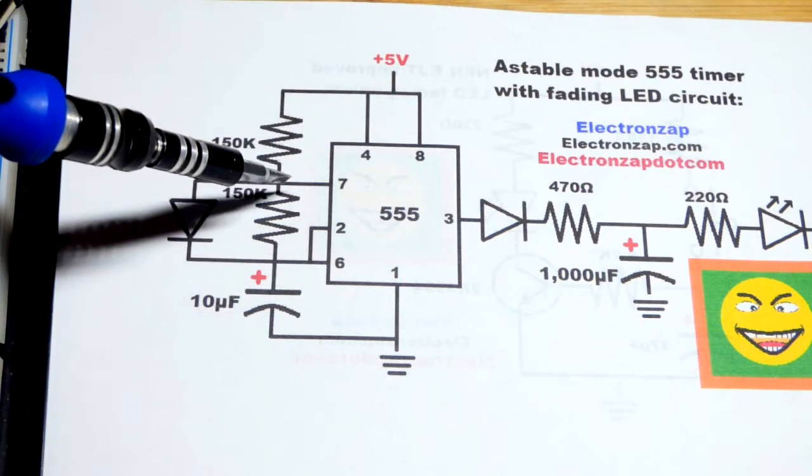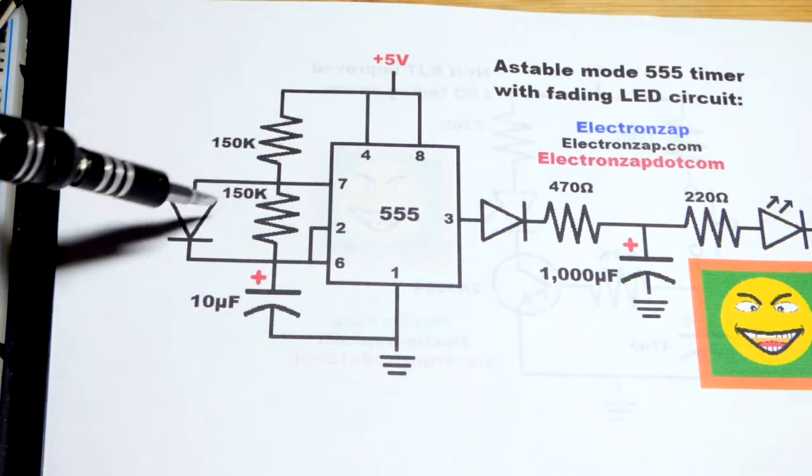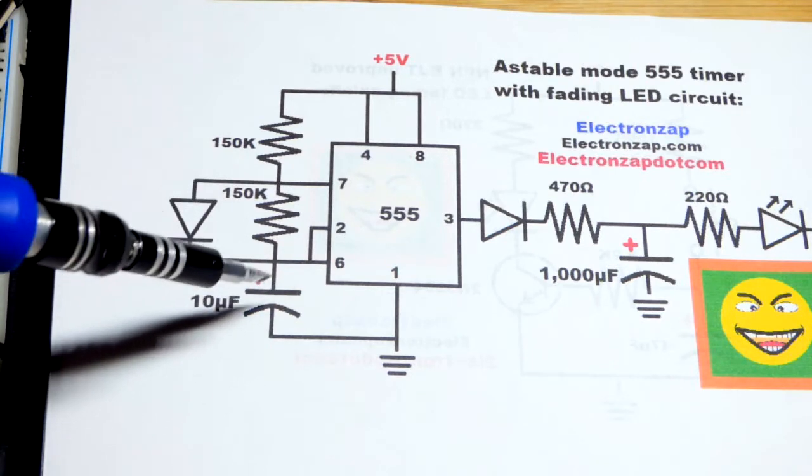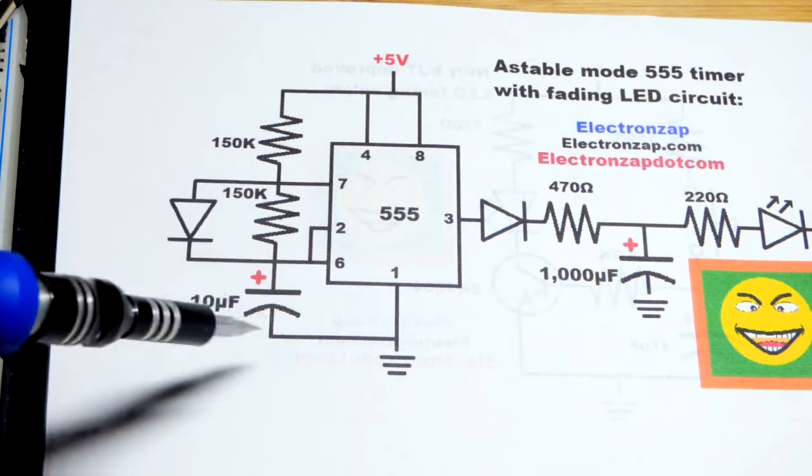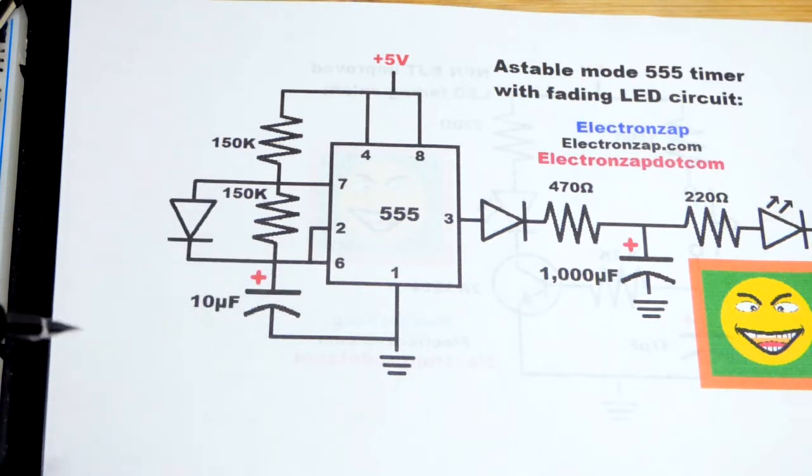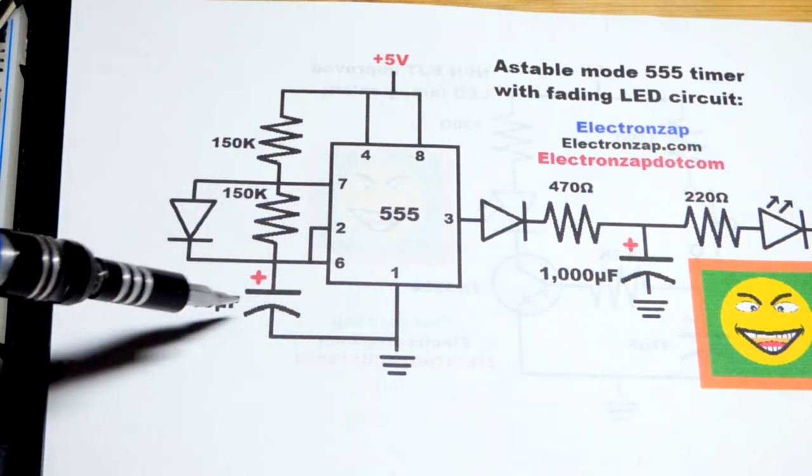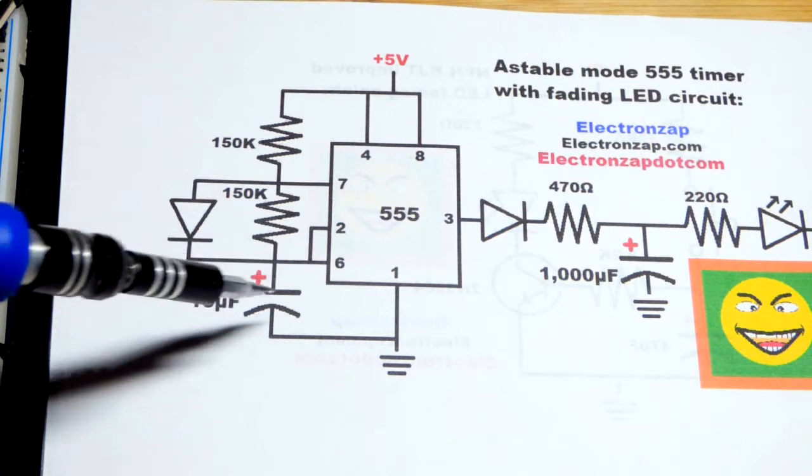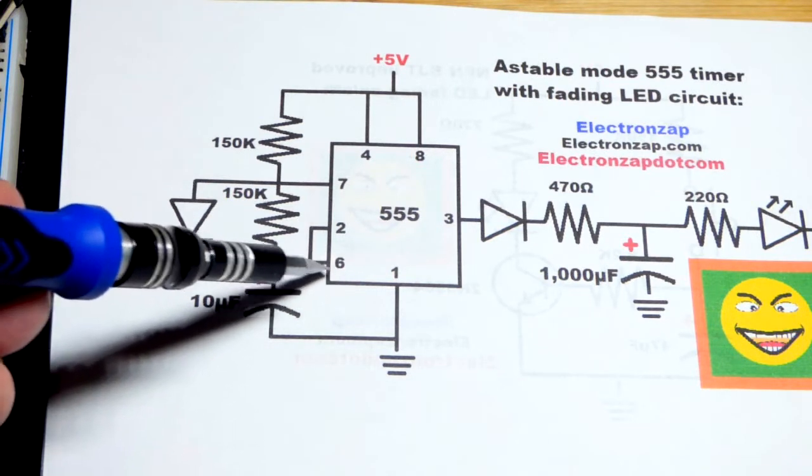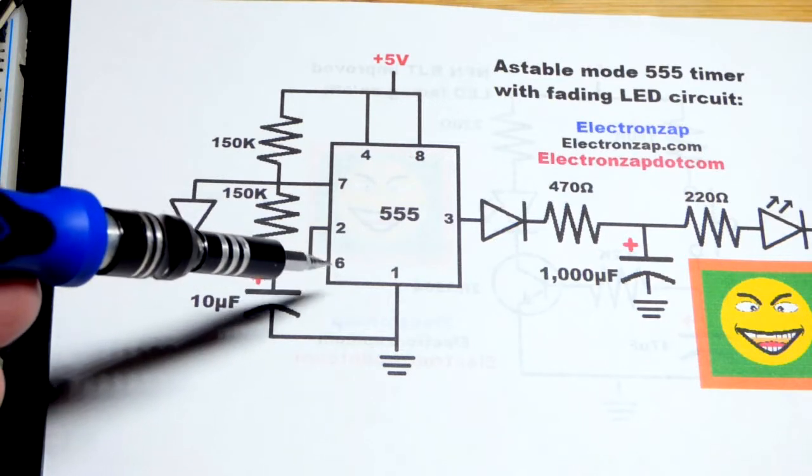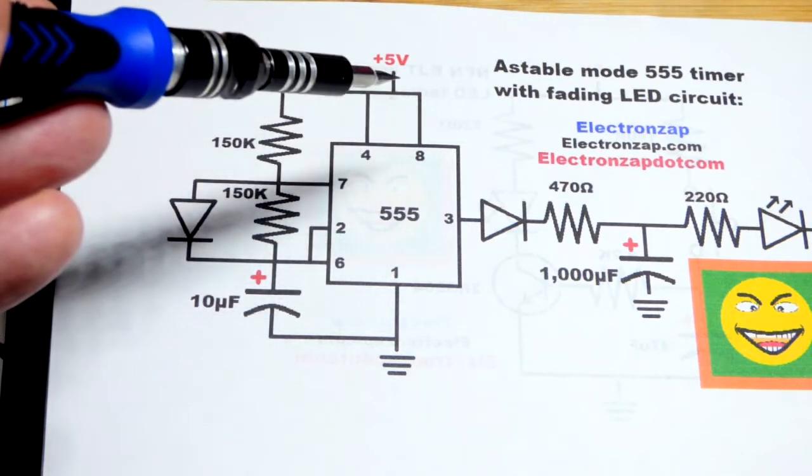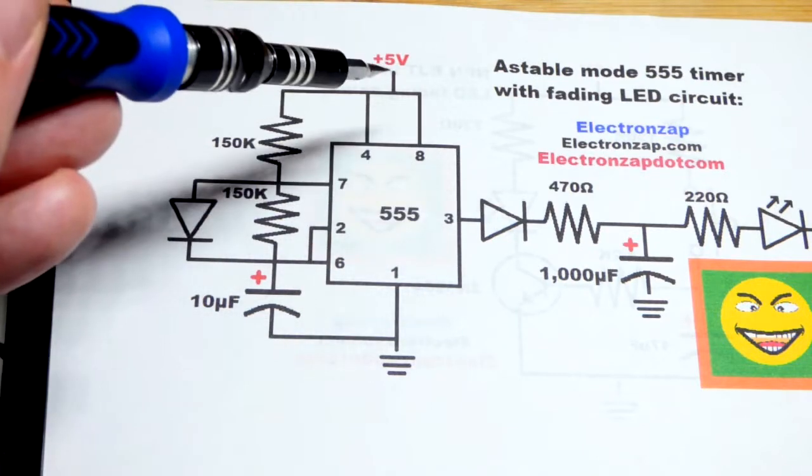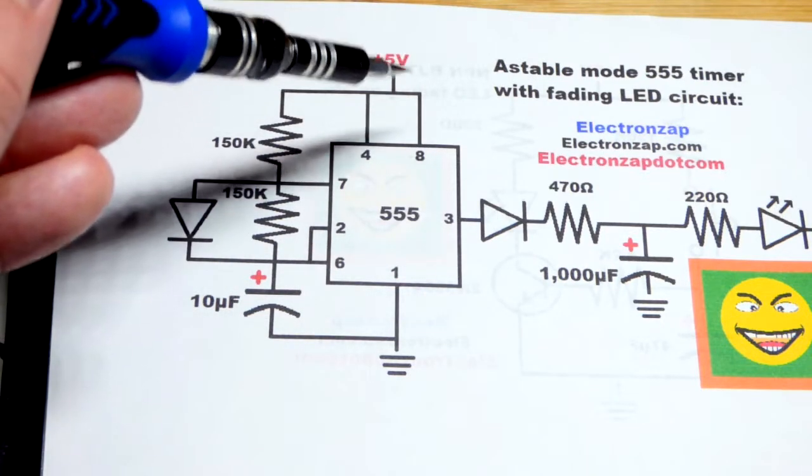It charges through that 150 kilohm resistor, that diode, and I'm going to use a 10 microfarad capacitor. So very little current but it's a low value capacitor, so it's going to charge in somewhere around a second approximately. Now the capacitor gets to two thirds supply voltage. Pin six will sense that. So while it's charging the output is also high. So it doesn't make it to five volts. Maybe it's four volts.